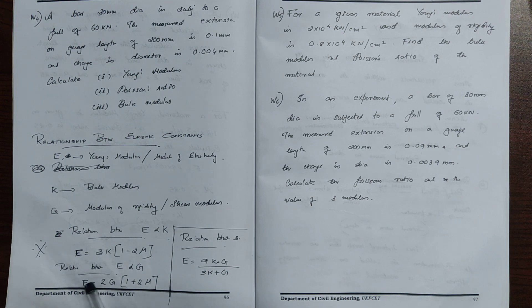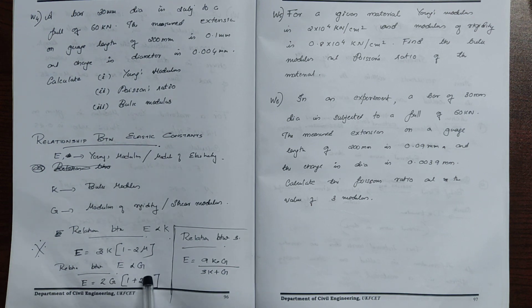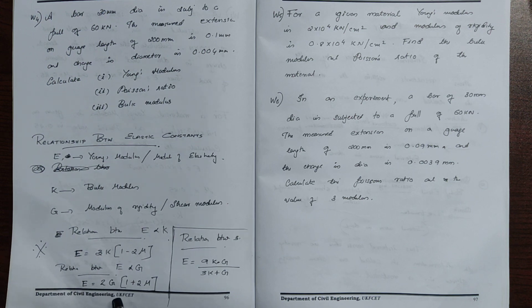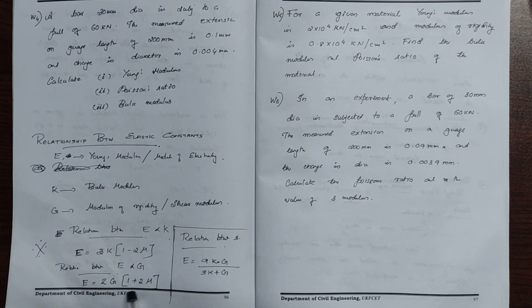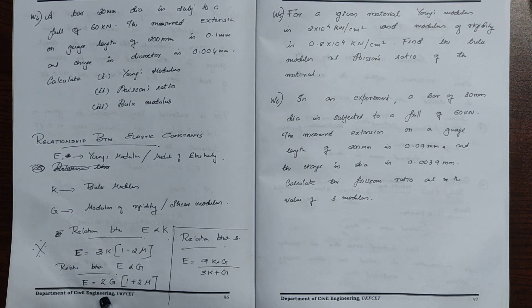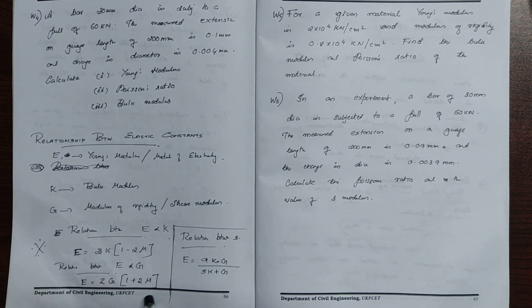Now the relation between E and G, the shear modulus. E is equal to 2G into 1 plus mu. So E equals 2G(1 + μ).